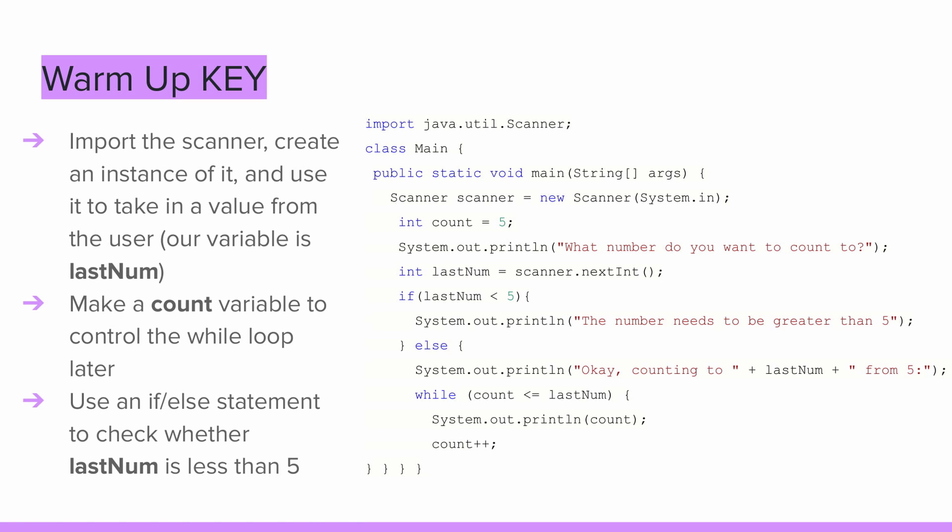Once you've finished, look at the key. The first important thing we have to remember to do is import the scanner. Then we'll make an instance of it and use it to store the user's inputted value as a variable. Ours is called lastNum, since it's the last number that will be printed out. Additionally, since we're using a while loop instead of a for loop, we have to make a counter variable in advance to control the loop later.